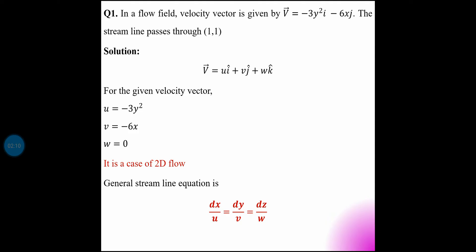The velocity vector is given by V = -3y²·i - 6x·j. The streamline passes through the point (1, 1). This is the general velocity vector equation for this problem.